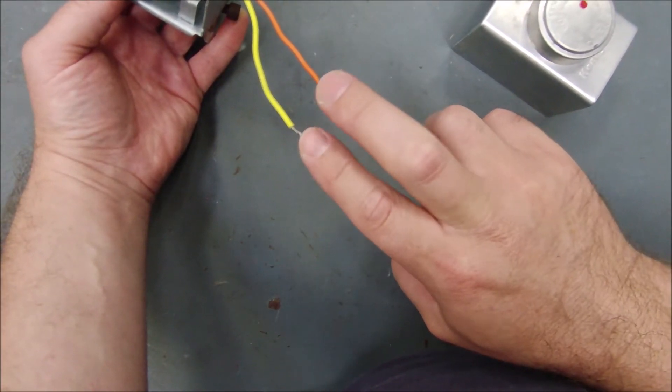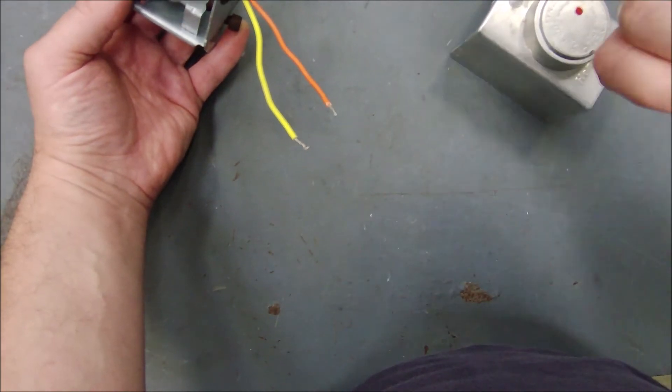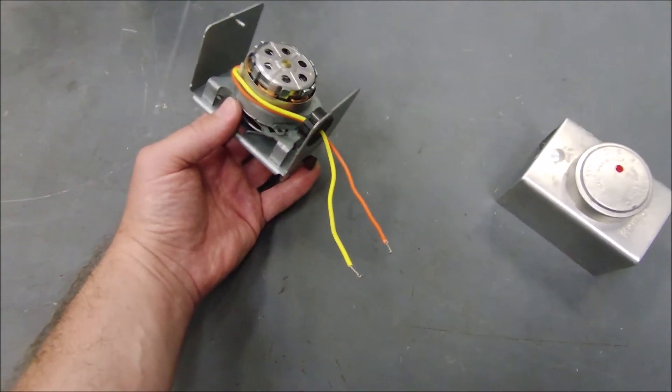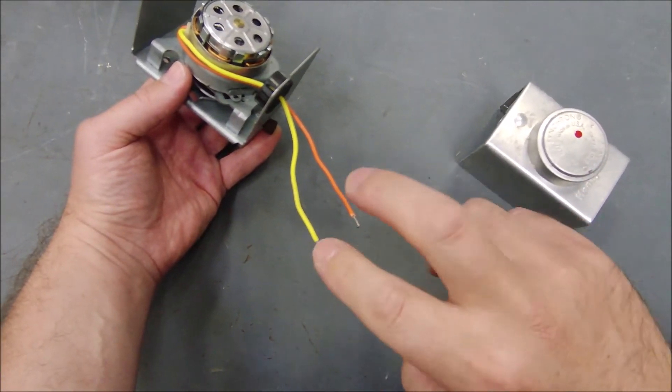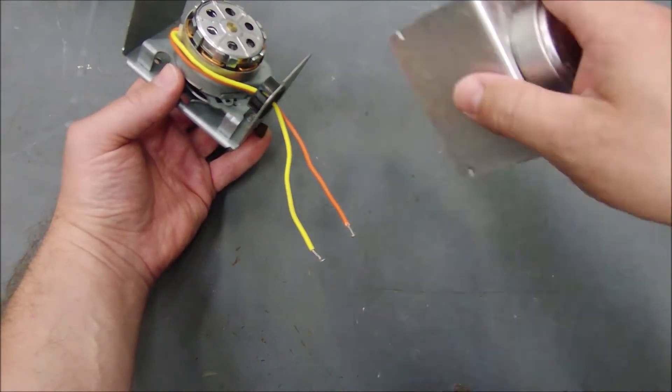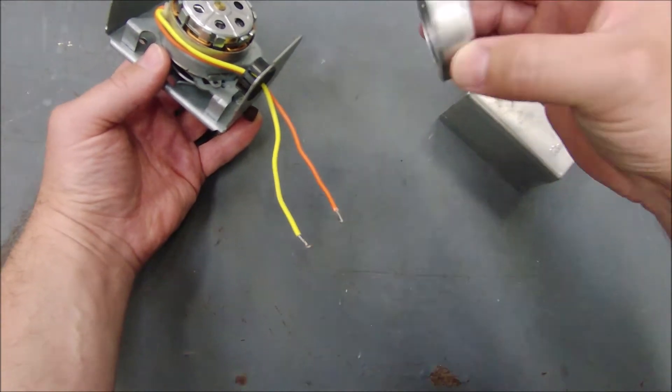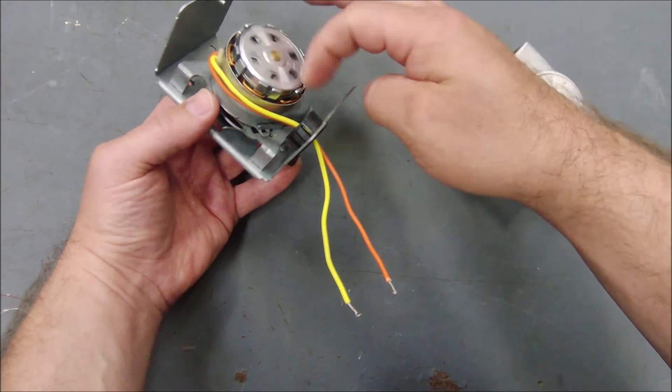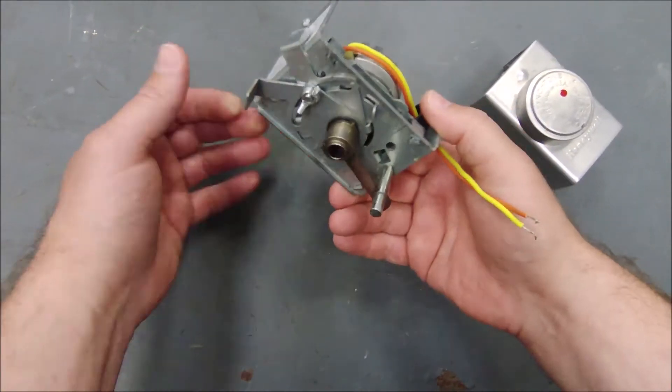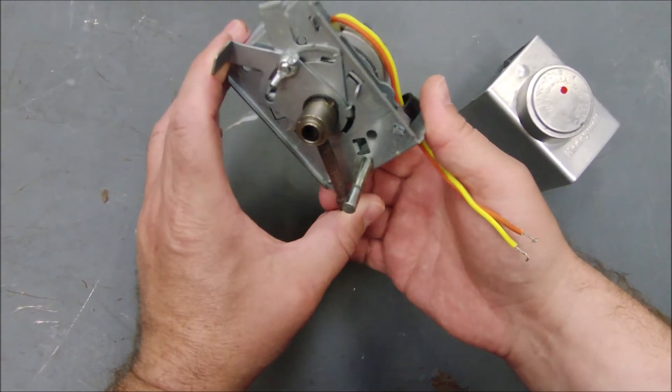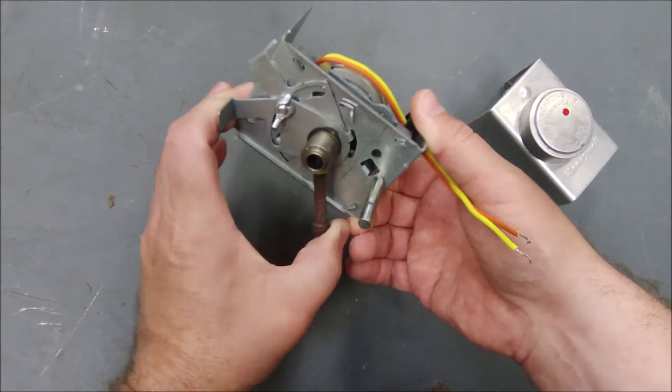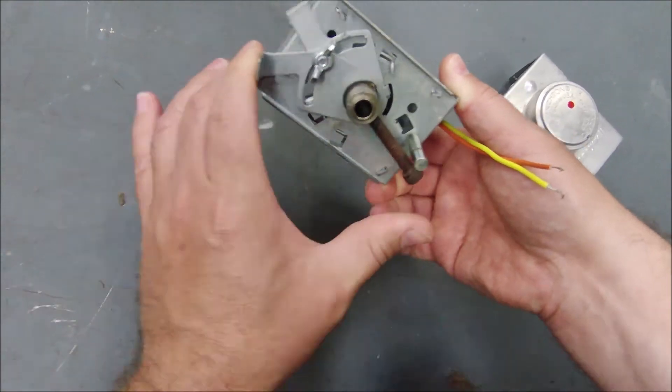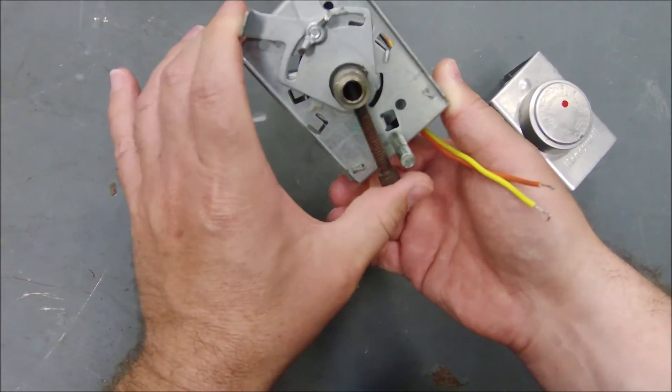Being that it's a spring open damper, you shouldn't have any power to have this thing open. When I took the covers off, especially this round one, I could see that little top right here started spinning. Here it is, you can see the spring. It'll actually spring open. You have to have power to close it.